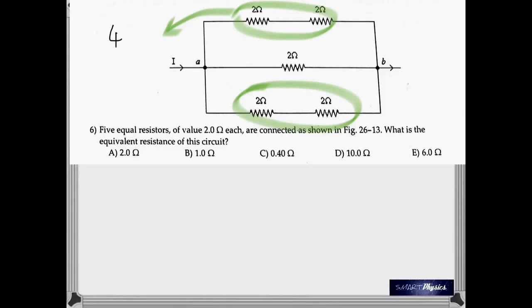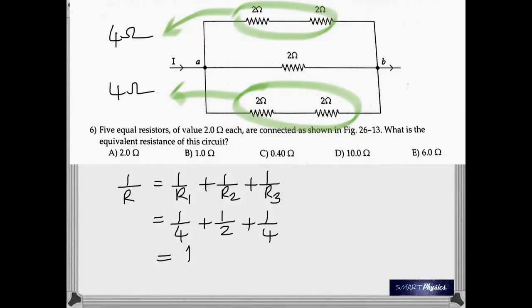Here, you have 5 equal resistors, all of value 2 ohms connected as shown. And as is very clear, these two are in series. So are these two. Therefore, you have 4 ohms and 4 ohms. And then you have the two 4 ohms connected to 2 ohms in parallel. So, again using the formula for equivalent resistance in parallel. And calculating, you get it as 1 ohm.